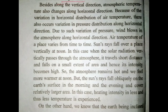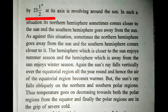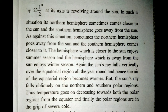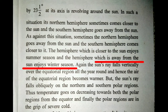The earth is inclined at 23.5 degrees at its axis and revolves around the sun. Because of this, the northern hemisphere sometimes comes closer to the sun while the southern hemisphere goes away, and vice versa. The hemisphere closer to the sun always experiences summer, while the hemisphere farther from the sun experiences winter.